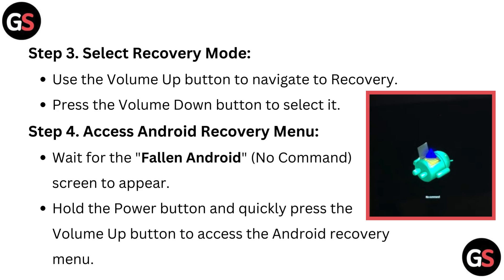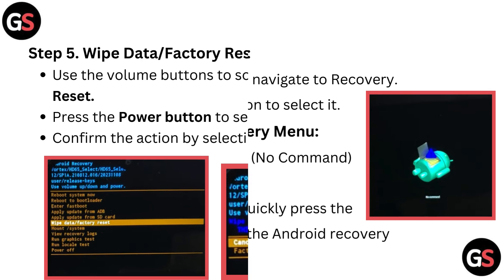Step 4: Access the Android recovery menu. Wait for the fallen Android no command screen to appear. Hold the power button and quickly press the volume up button to access the Android recovery menu.